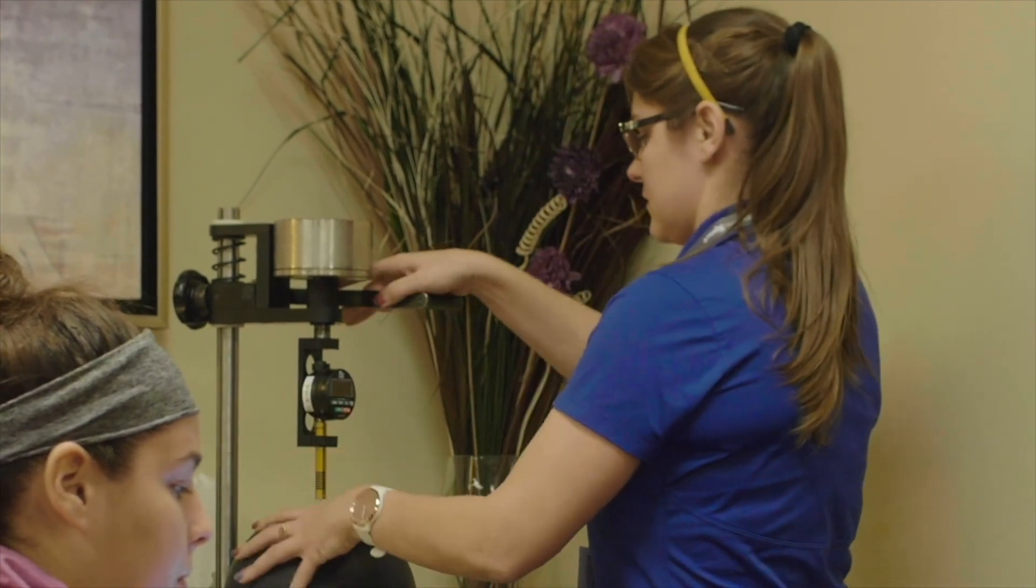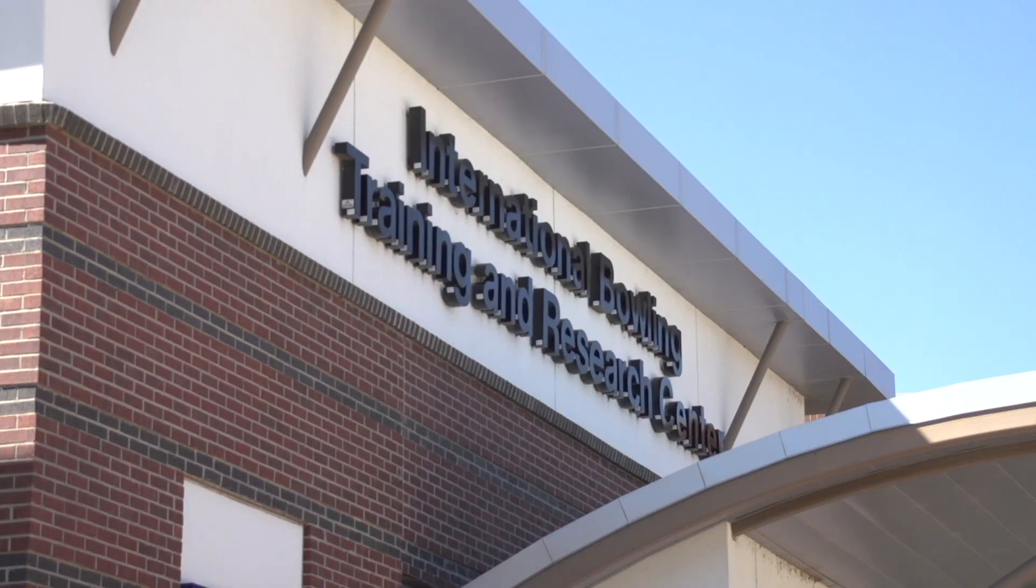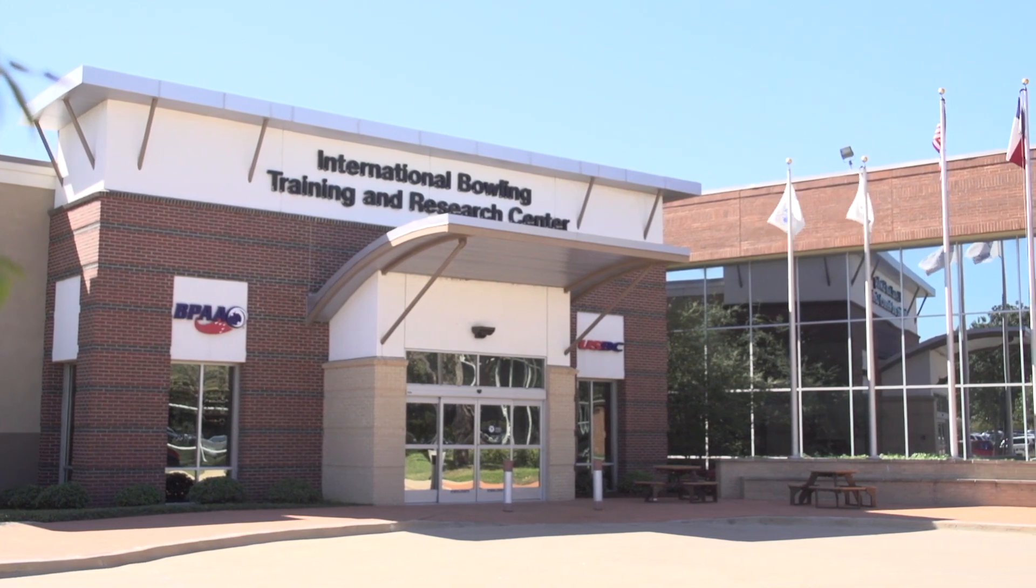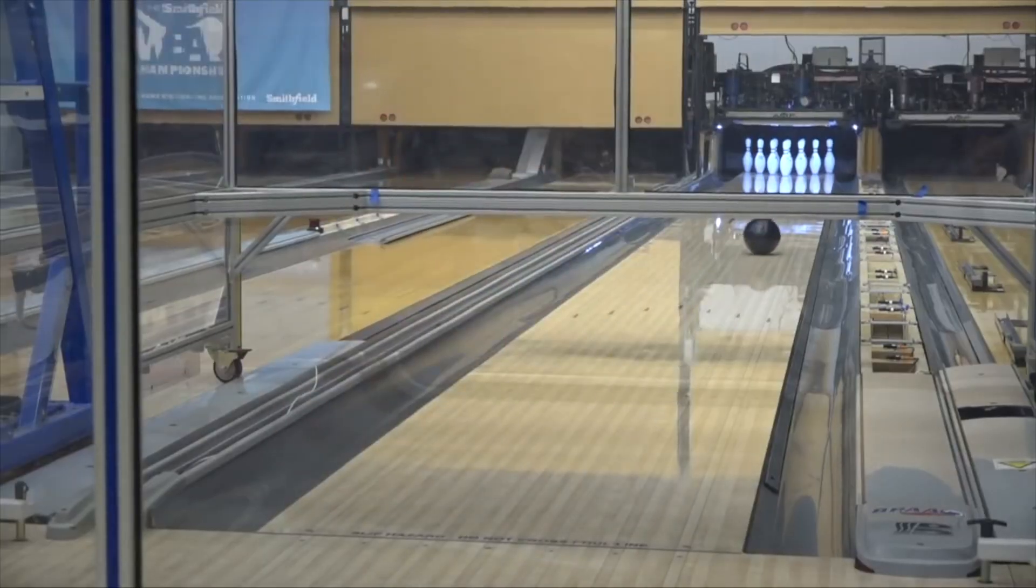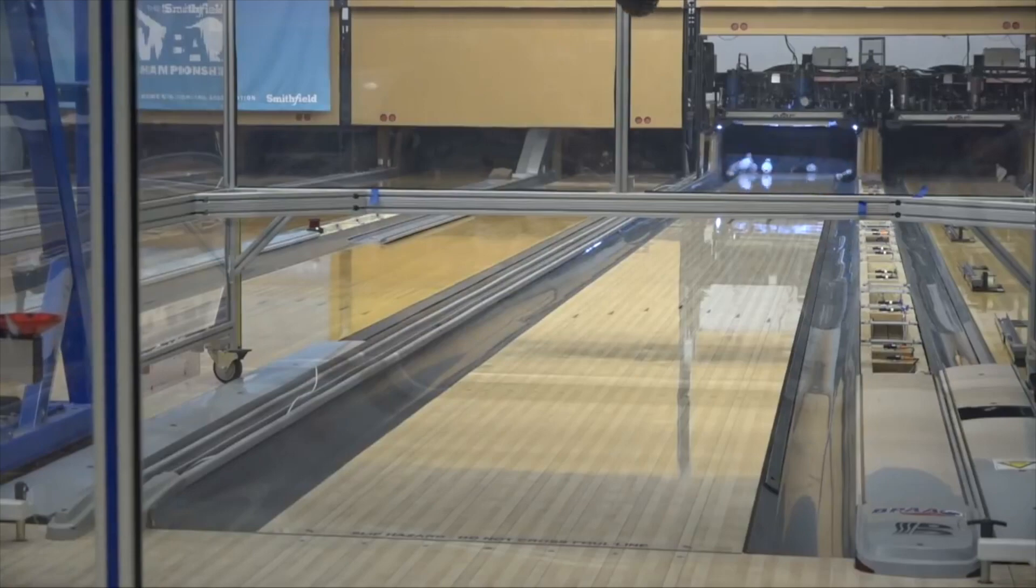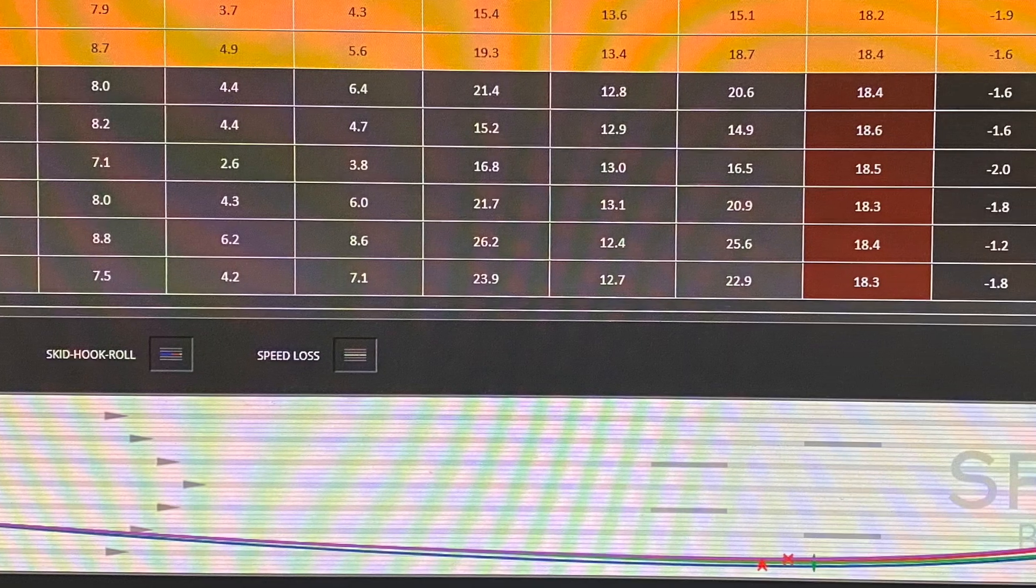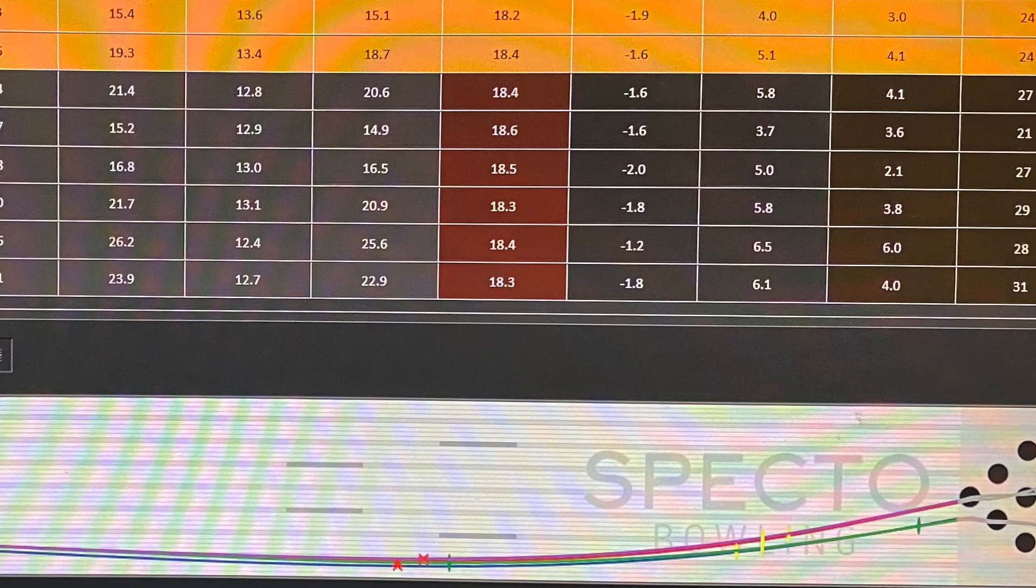In addition to the testing conducted in the field and the lab, the equipment specifications team conducted research at the International Training and Research Center utilizing USBC's automated ball-throwing robot, Earl, to better understand the performance implications of hardness variation in urethane bowling balls.